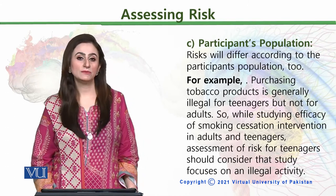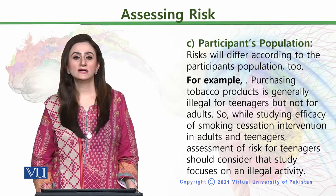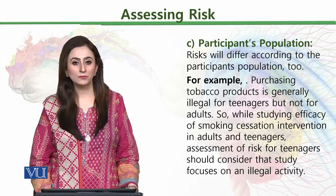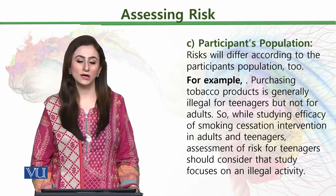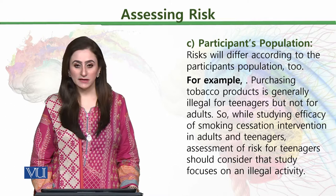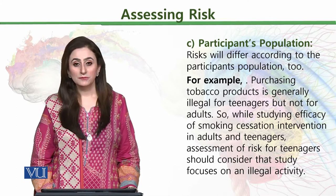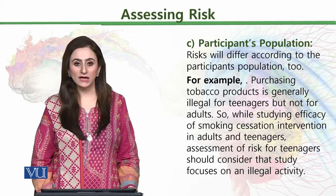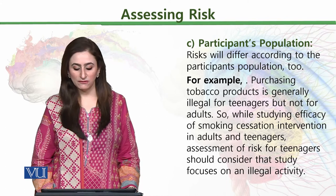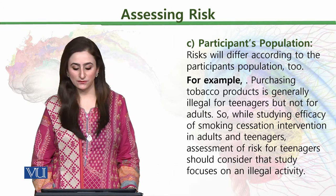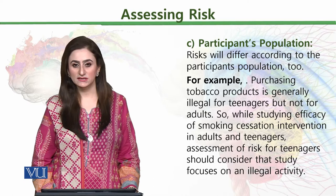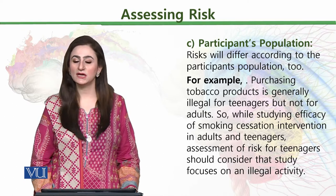Participants' population also matters a great deal. It can be difficult to determine how much risk differs according to the participants' population. For example, purchasing tobacco products is generally illegal for teenagers but not for adults. So while studying the efficiency of a smoking cessation intervention in both adults and teenagers, the risk assessment for teenagers should consider that the study may involve an illegal activity for that age group.